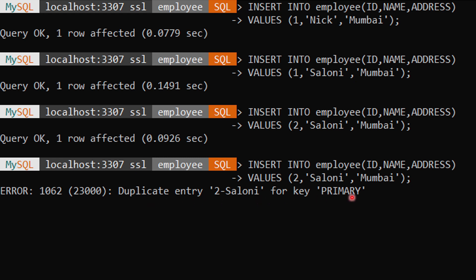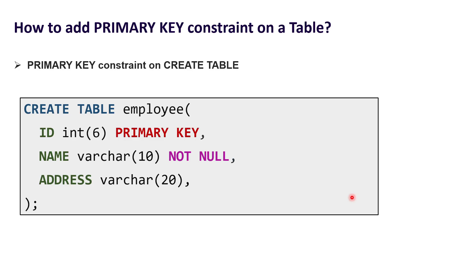One more thing — you can also write the primary key constraint inline, the same way we write NOT NULL and UNIQUE. And if you want a combination of columns as primary key, you can write PRIMARY KEY in front of each of those columns. That's all about primary keys.